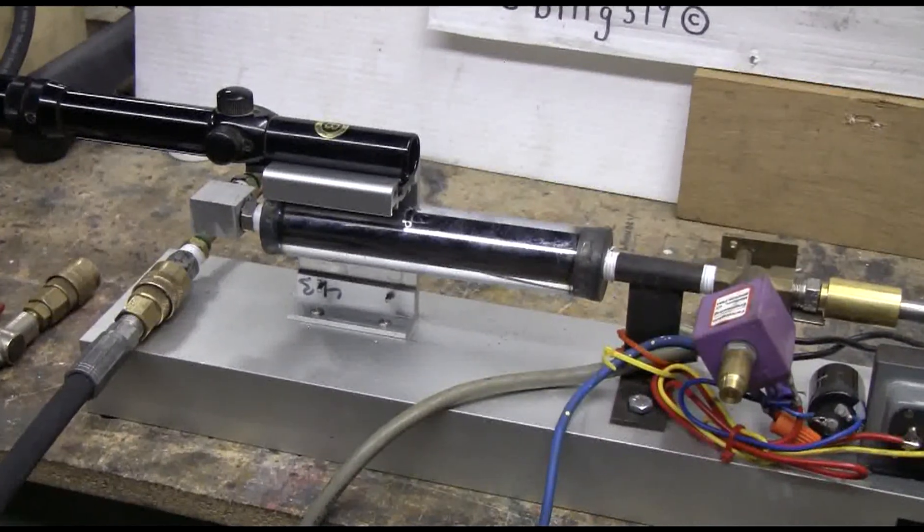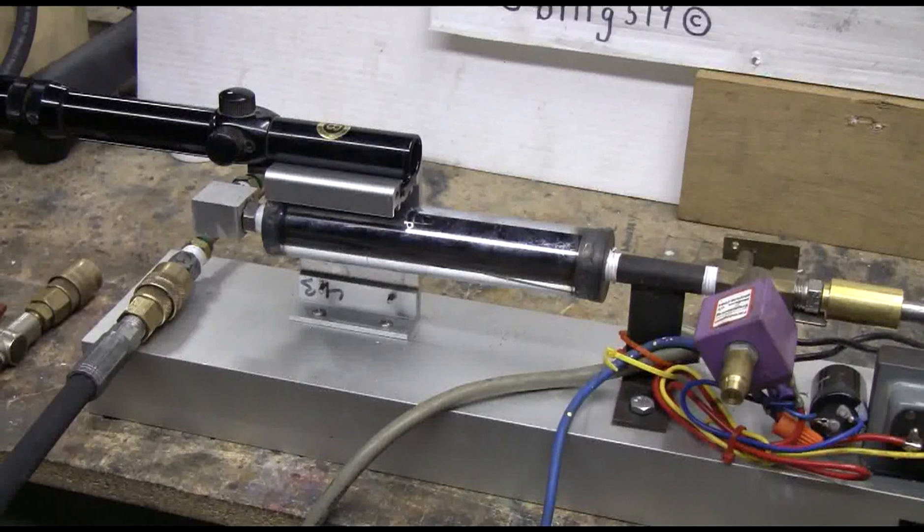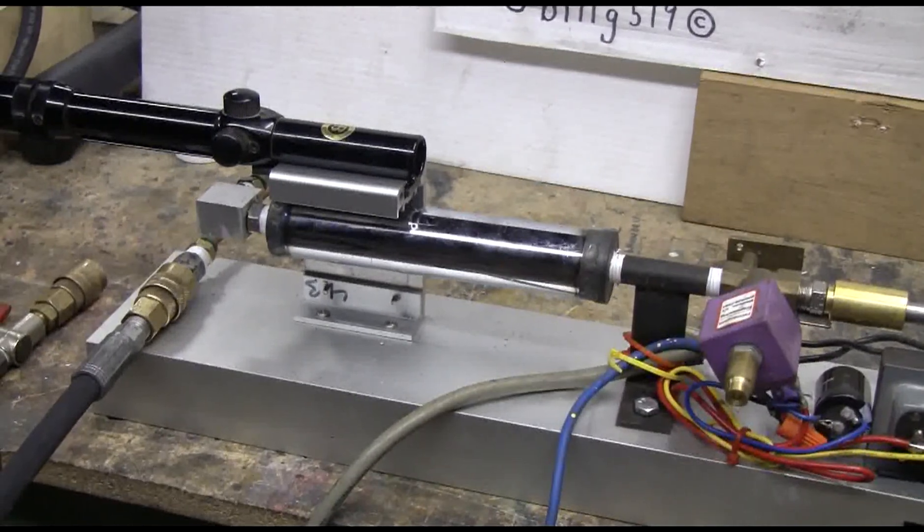The air cylinder is six inches long by an inch and an eighth diameter, tested to a thousand PSI.